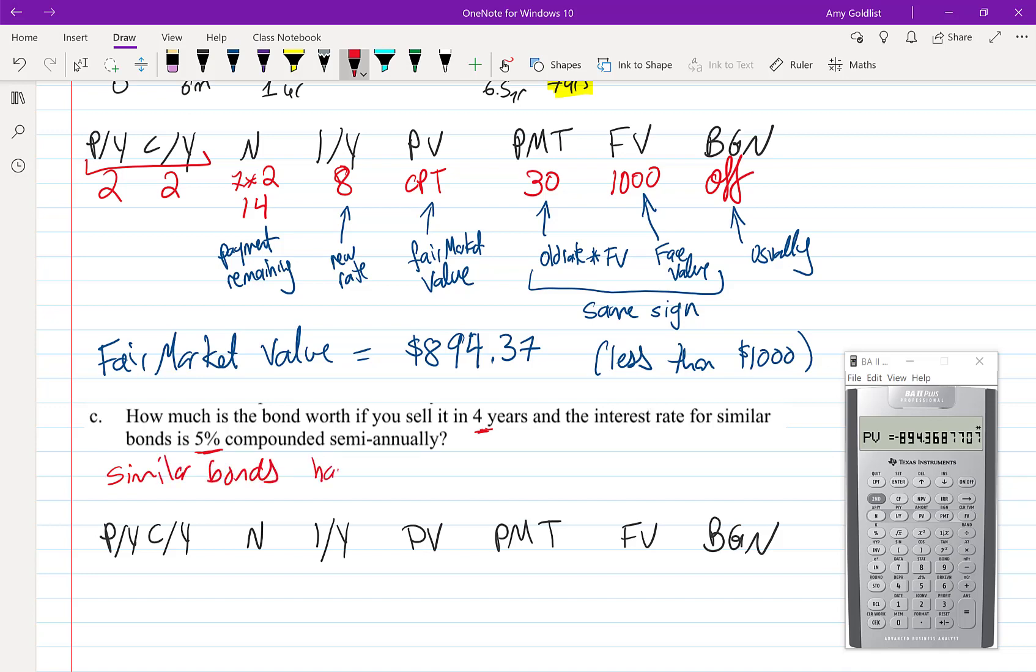...has a coupon payment of $1,000 times 0.05 over 2, which is $25. So our $30 bond should be worth more. Now, four years means six years left, which makes our N six times two—we have 12 payments.